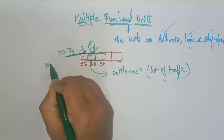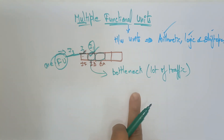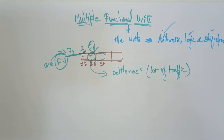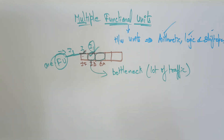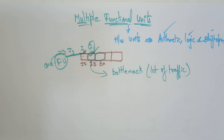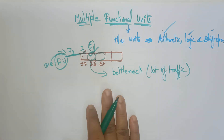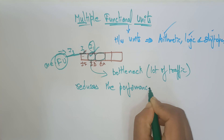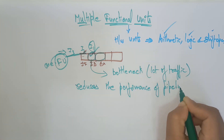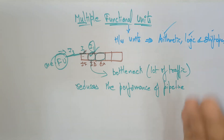If only one functional unit is there, there is a chance of a bottleneck problem — a lot of traffic will exist. Why? Because if any one instruction is halted in any stage because the operands are not present, or the operands are being used by another instruction, it has to wait in that stage for a long time. Until that operation is not completed, it is not able to take another instruction, so obviously the traffic increases. This is the problem with one functional unit, and because of this, it reduces the performance of the pipeline.